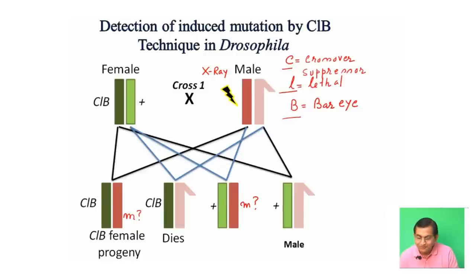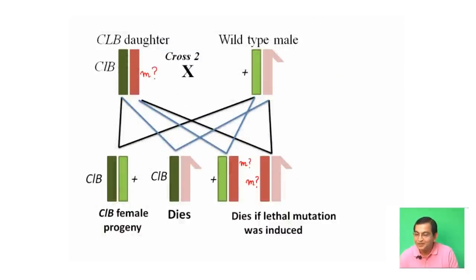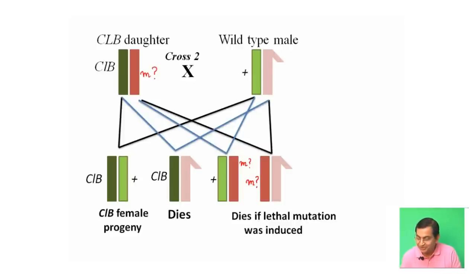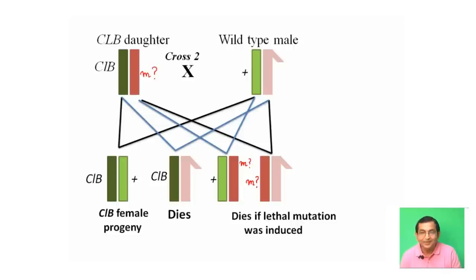In the second cross, he crossed the CLB daughter with a wild-type male. This CLB daughter carries a potentially irradiated X chromosome that is supposed to carry a mutation. In the F2 generation, he obtained all females and no males.